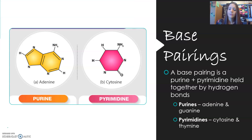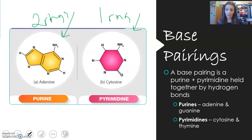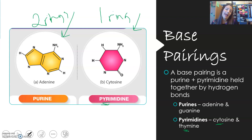Bases are either a purine or a pyrimidine — you can see the difference in structure: a purine has two rings, and a pyrimidine only has one ring. A really easy way to remember which is which: pyrimidine has a Y, and cytosine has a Y, and thymine has a Y. So the pyrimidines are cytosine and thymine, making adenine and guanine your purines. They always pair purine to pyrimidine.